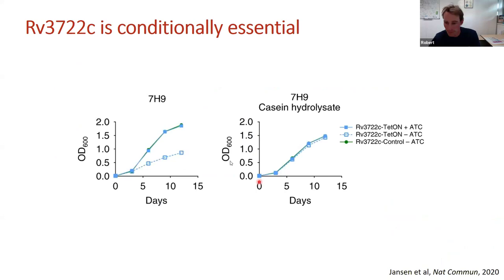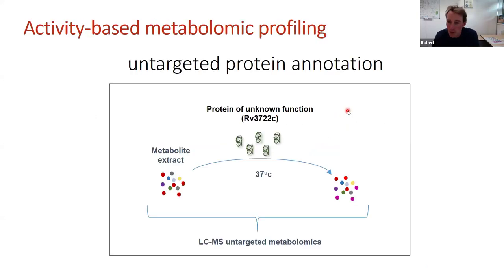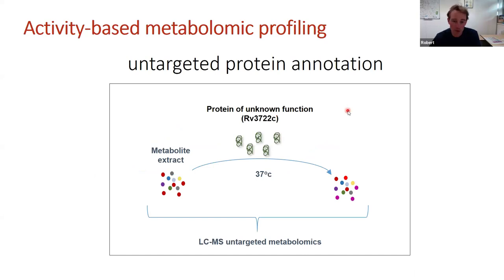The first thing we did was make a knockdown of this bacterium. The wild-type grows fine in standard culture medium, while the knockdown shows delayed growth — confirming it's essential. Importantly, adding casein hydrolysate, a complex mixture of amino acids and small peptides, rescued growth, suggesting this enzyme makes a product present in that supplement.